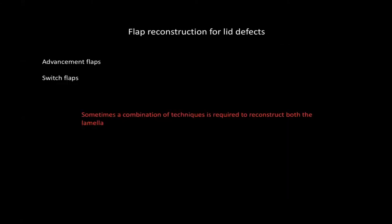In cases where the lid cannot be approximated primarily, we have to consider two broad options: advancement flaps and switch flaps. Sometimes a combination of these techniques is needed to reconstruct both lamellae, because some flaps only provide tissue for one lamella and you will have to consider other options for what the flap has not provided.